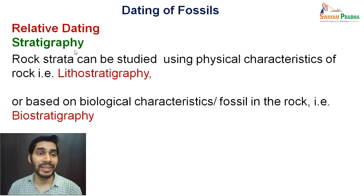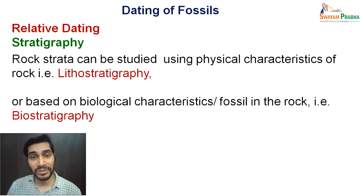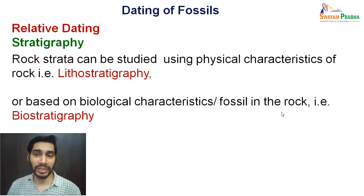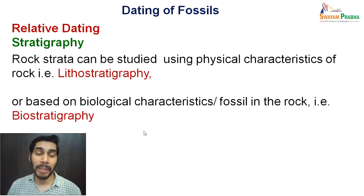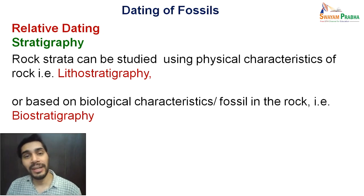Stratigraphy can be carried out using the physical characteristics of rock — this branch is called lithostratigraphy. But you can also understand stratigraphy using the study of fossils and their biological characters found in that rock — that is called biostratigraphy. It is a two-way process: at times you use rock characteristics to predict the age of fossils, and on the other hand you use knowledge of fossils to understand the rocks and stratigraphy.